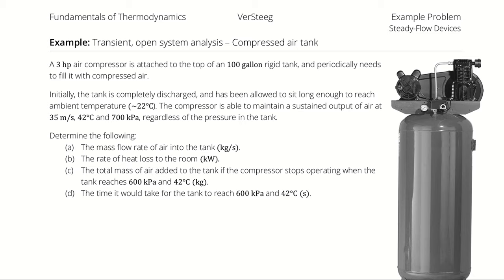Determine A, the rate of mass flow into the tank; B, the rate of heat loss to the room; C, the total mass of air added to the tank if the compressor stops when the tank reaches 600 kilopascals and 42 degrees Celsius; and D, the amount of time it would take to do that.